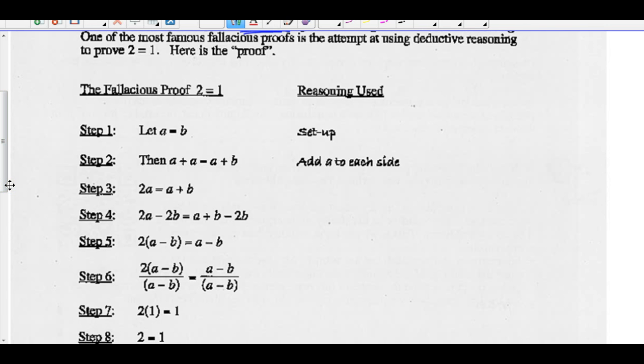In mathematics, a fallacy is an incorrect argument in logic or deductive reasoning. One of the most famous fallacious proofs is the attempt at using deductive reasoning to prove that 2 is 1. Here is that proof. Step 1, let A equal B. That's our setup. If that's true, then A plus A should equal A plus B. We're adding A to both sides.